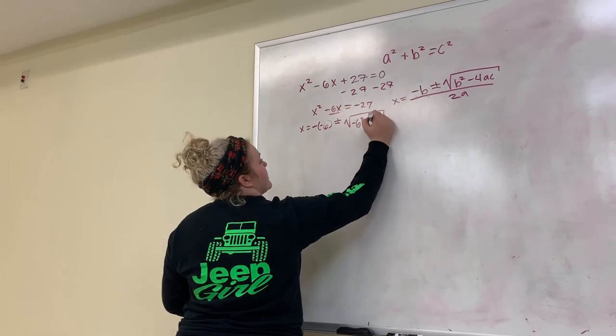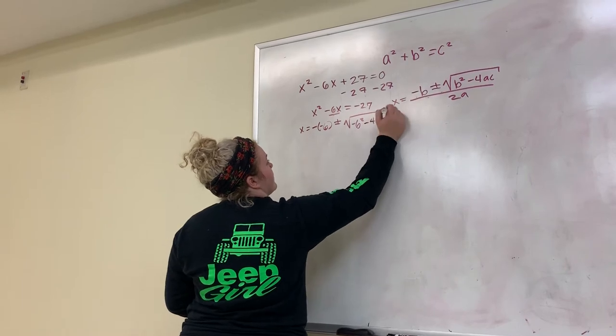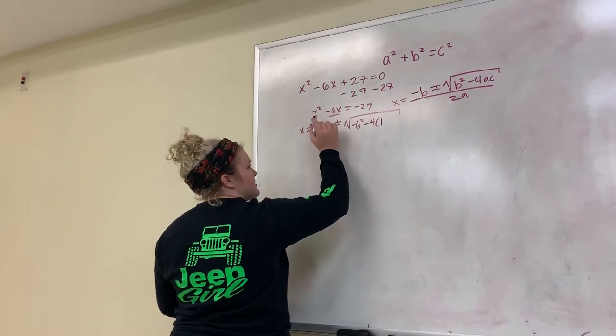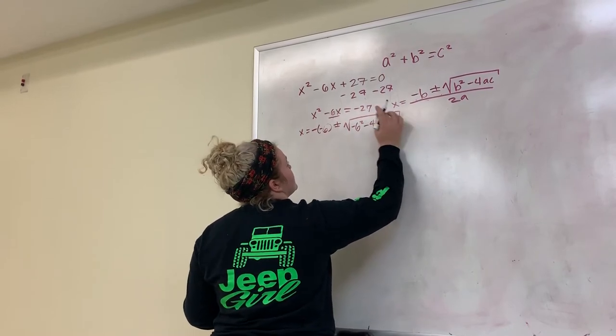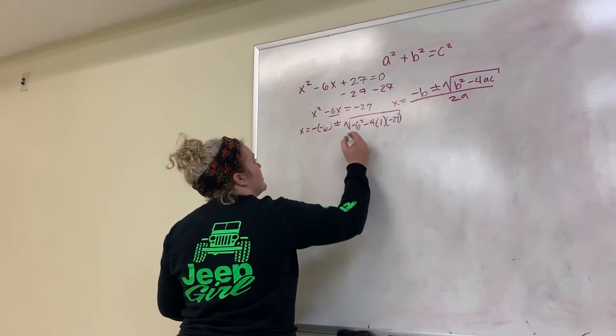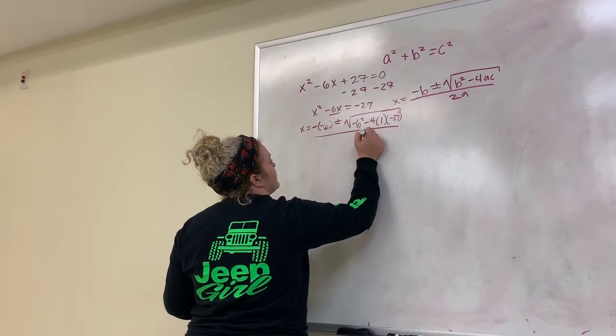So negative 6 squared minus 4 times 1. I'm getting the 1 because we're assuming x equals 1 times negative 27, which I'm getting from right here. And then we're going to put that over 2 times 1.